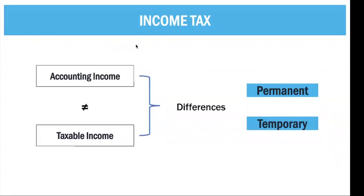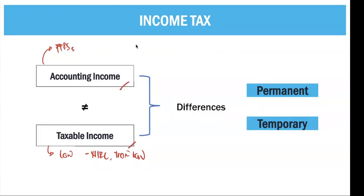Let's start income tax under IAS-12. Our main focus is the reconciliation of your accounting income and your taxable income, because accounting income is prepared under PFRS — that is composed of IFRS, IAS, and IFRIC. But your taxable income is prepared based on our law, that is your NIRC as amended by your Train Law. Since those two items are prepared differently, there are differences between the accounting income and the taxable income, and these differences are accounted for under your income tax.